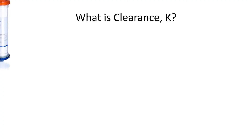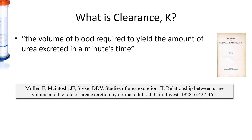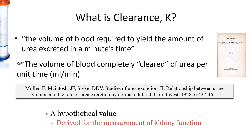What is clearance? The original definition is here, but to phrase it more clearly, it is the volume of blood that is completely cleared of urea per unit time, and this is in mLs per minute. This is of course a hypothetical value derived for the measurements of kidney function, because the blood is never completely cleared of urea.